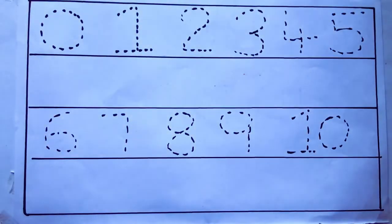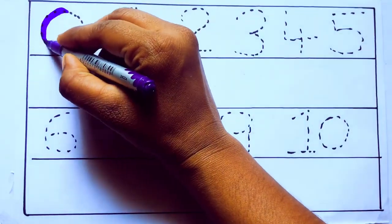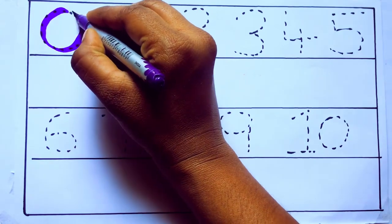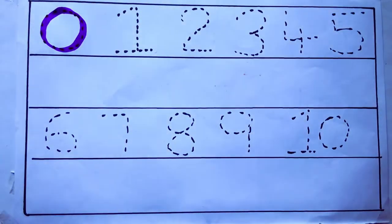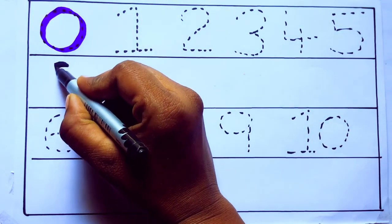Let's draw numbers. Violet color 0, Z, E, R, O. Violet color 0.